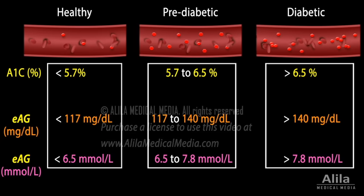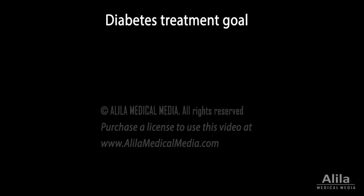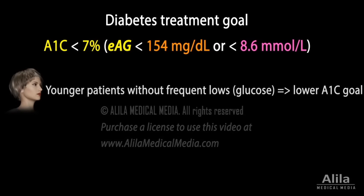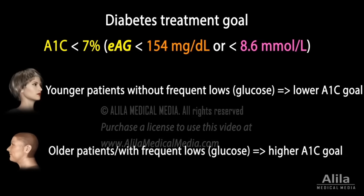A1c is an important tool for managing diabetes. For most diabetics, the goal is to bring the A1c level down to 7% or less. However, patients' age and other health conditions must be taken into account when setting goals. In general, younger patients who don't often experience severe low glucose — known as hypoglycemia — need lower goals to avoid diabetes complications in the many years ahead. Older patients or those having frequent low glucose episodes may have a higher goal.